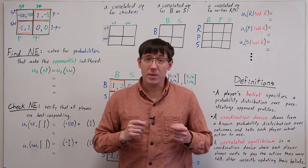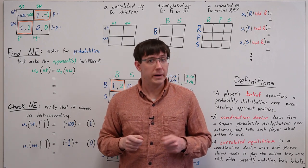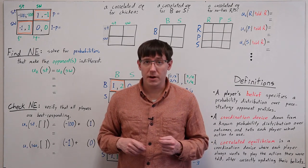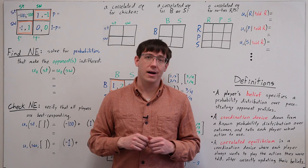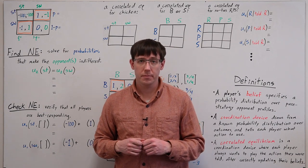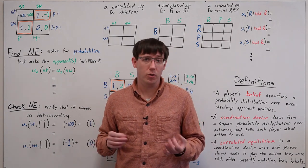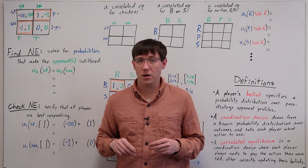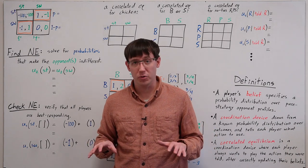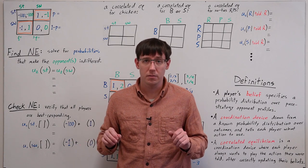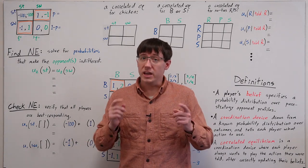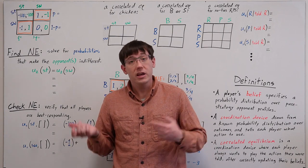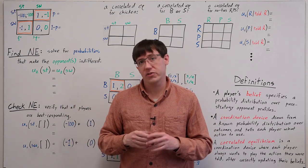It turns out that this game has a third Nash equilibrium in mixed strategies. There's a rule of thumb that almost all games have an odd number of Nash equilibria, and that rule of thumb can be formalized into a theorem, but the conditions on 'almost all' are quite technical and complicated to prove. The upshot is: if you know that a game has two Nash equilibria, you should strongly suspect the presence of a third.